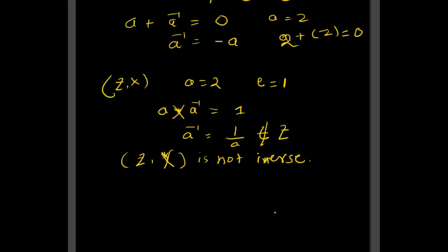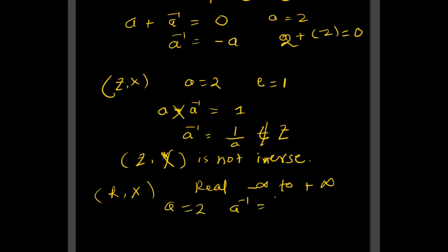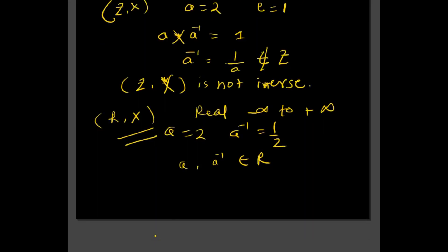Now let us take the example of real numbers with multiplication. The range of real numbers is from minus infinity to plus infinity, and that includes fractional numbers. So if a equals 2, then a-inverse equals 1/2, and both a and a-inverse belong to the real numbers. Therefore, real numbers with multiplication satisfy the inverse property.